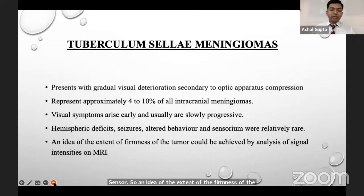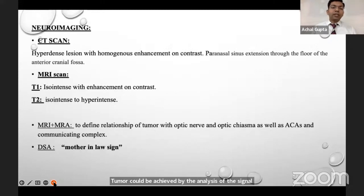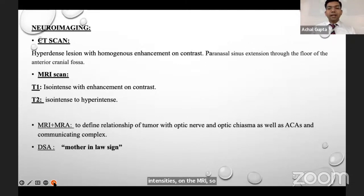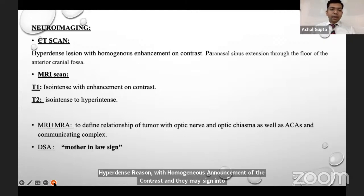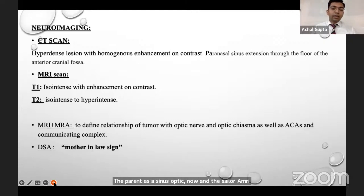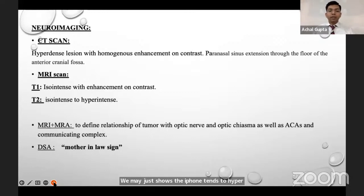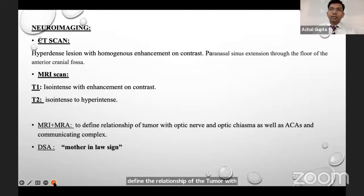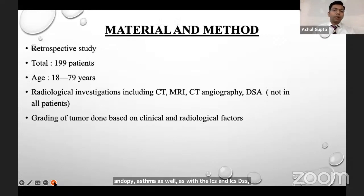An idea of the extent and firmness of the tumor can be achieved by analysis of signal intensities on MRI. CT scan shows a hyperdense lesion with homogeneous contrast enhancement, which may extend into the paranasal sinus, optic nerve, and sella. MRI T1 shows iso-intense signal with contrast enhancement, and T2 shows iso-intense to hyper-intense signal. MR angiography is required to define the relationship of the tumor with the optic nerve, optic chiasma, ICAs, and ACAs. DSA typically shows the mother-in-law sign, where the blush comes early and goes late.